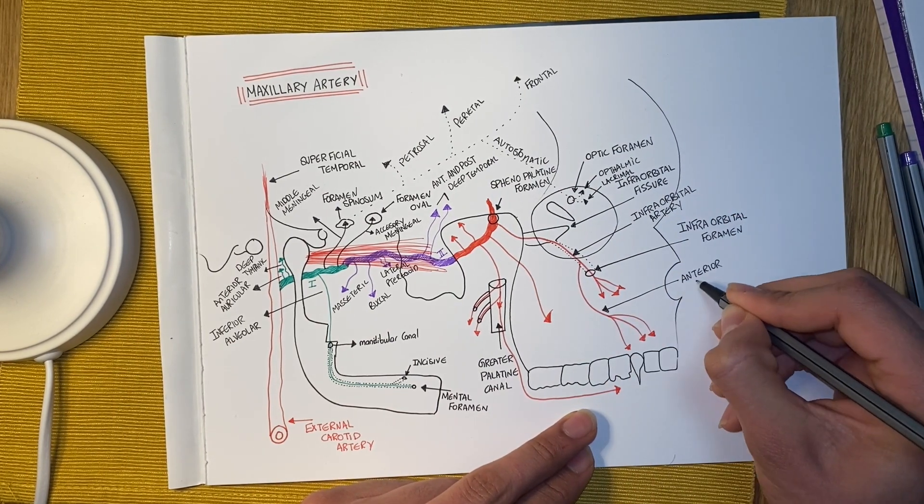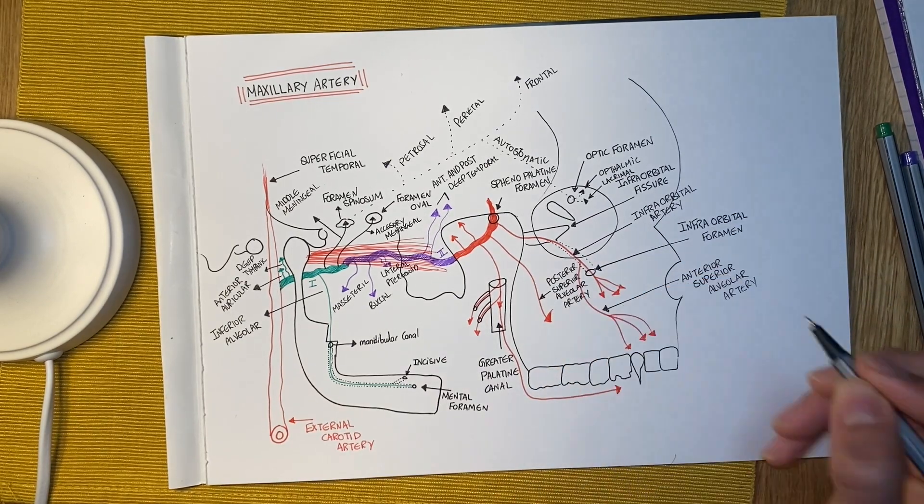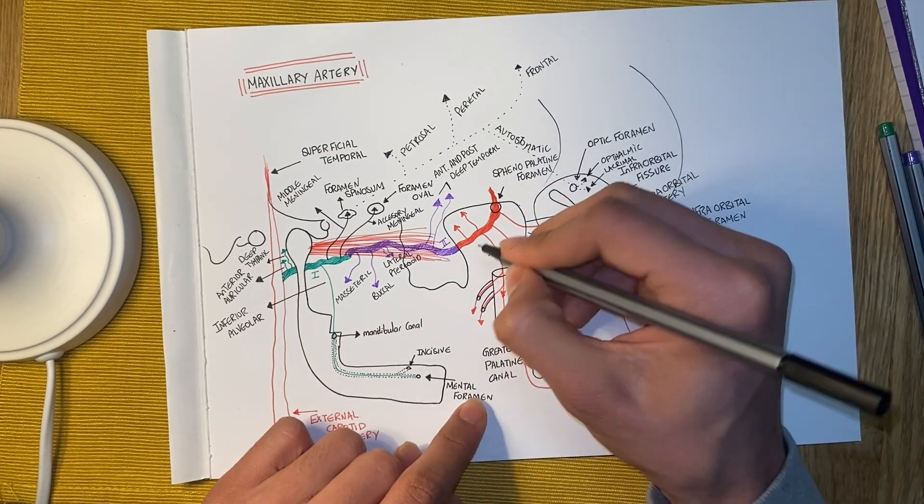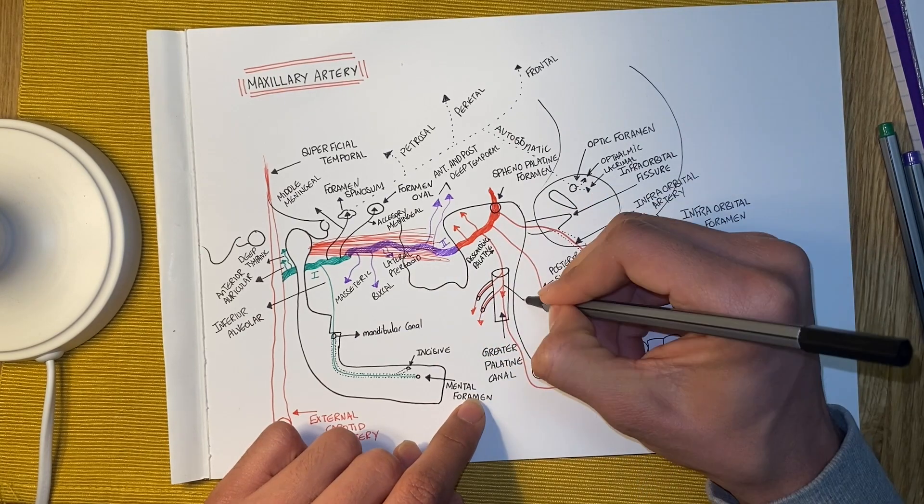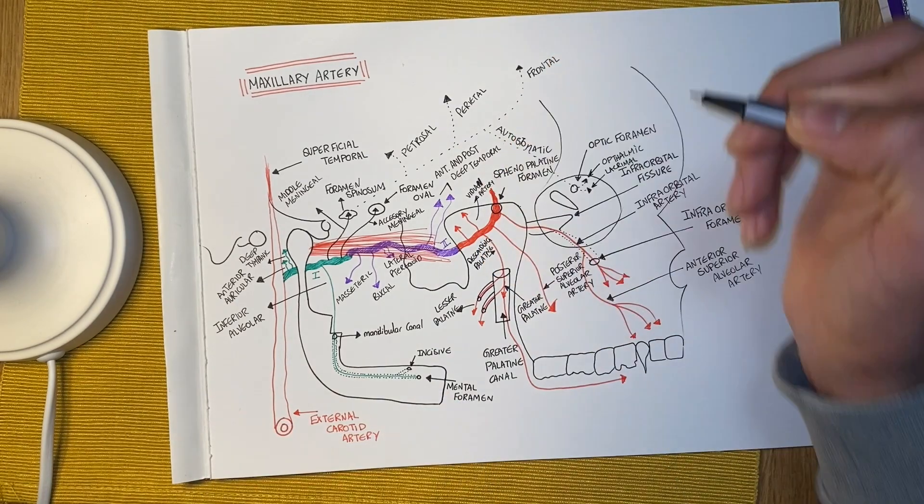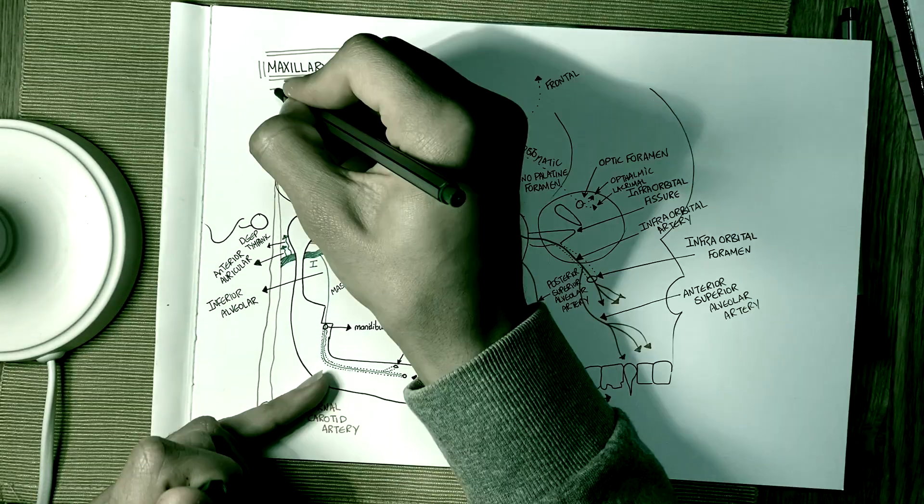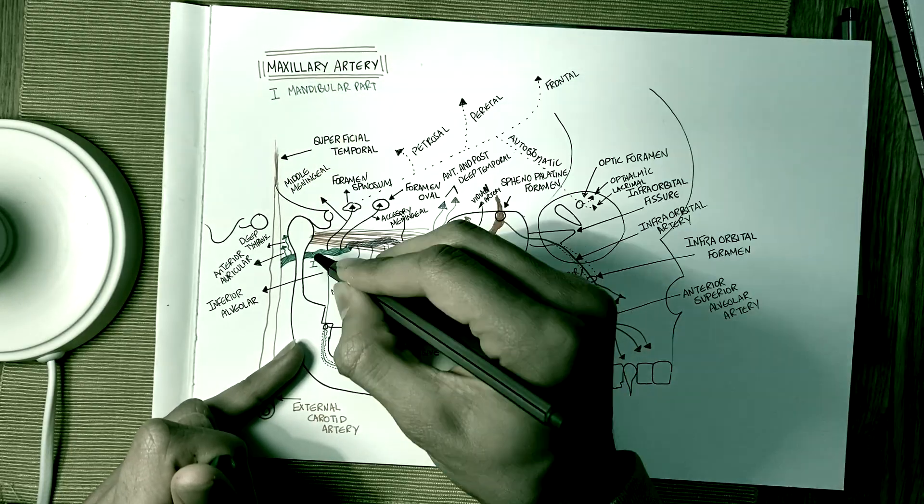Such as the infraorbital artery, anterior superior alveolar artery, posterior superior alveolar artery, the descending palatine. From here we get the greater palatine and the lesser palatine, the Vidian also is there, and the pharyngeal. Remember mandibular part number one.